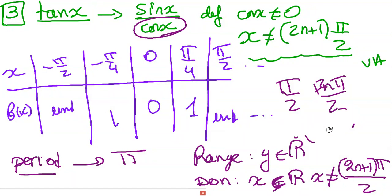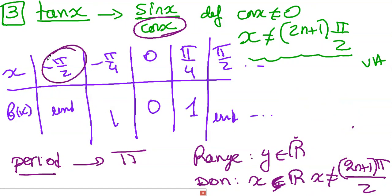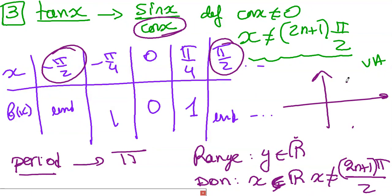To draw tangent x, I need particular points. At x = -π/2 and x = π/2 it's undefined — these become vertical asymptotes. The period of tangent is π because on the unit circle, quadrant 1 gives sine/cosine = plus/plus, and quadrant 3 gives minus/minus, both positive — the pattern repeats every π. In quadrants 2 and 4, tangent is negative. That's why the period of tangent is π.